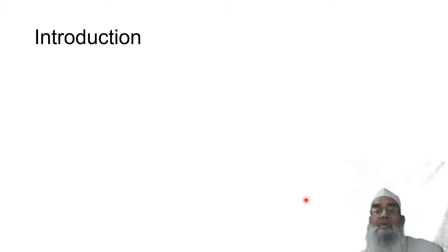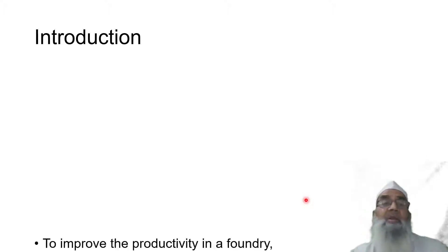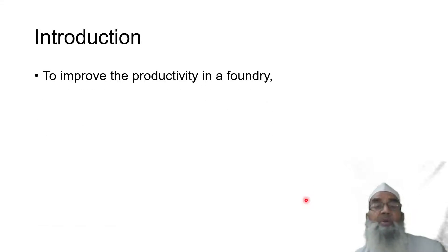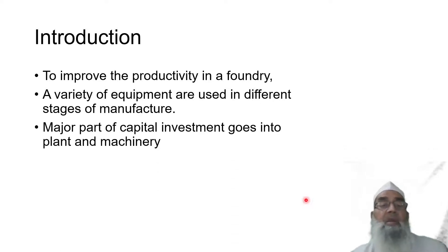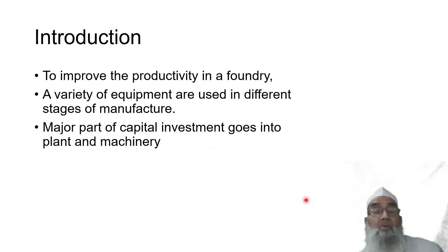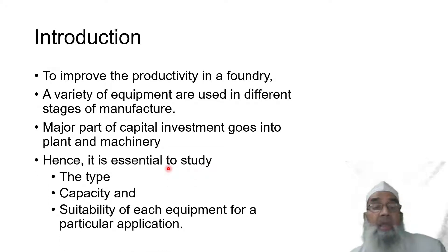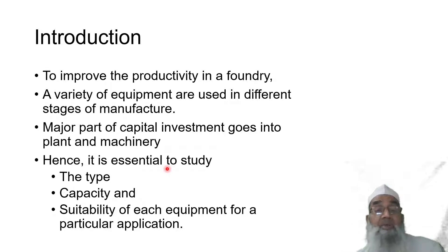Before going into detail of the modernization and automation of foundries, it is better to discuss the importance of it. To improve the productivity in a foundry, a variety of equipment are used in different stages of manufacturing, and the major part of capital investment goes into the plant and machineries. Hence, it is essential to study the type, capacity, and suitability of each equipment for a particular application.